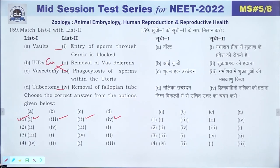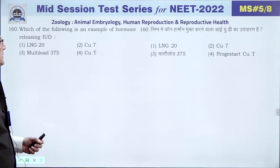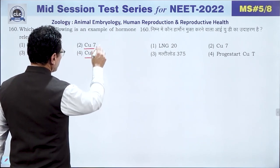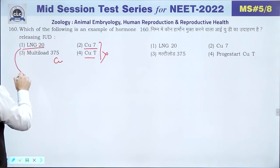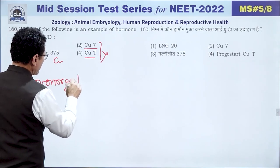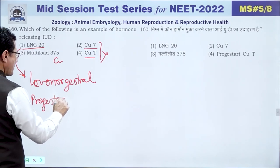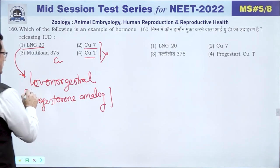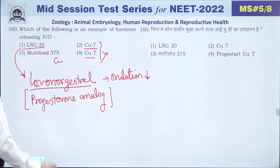Question 160: Among the listed IUDs, the hormone-releasing IUD is levonorgestrel. Copper-T and multi-load are copper-releasing IUDs. Levonorgestrel is a progesterone analogue that suppresses ovulation. The answer is 1 — levonorgestrel.